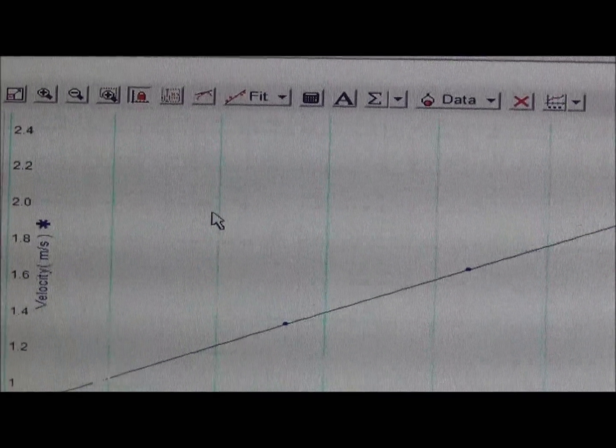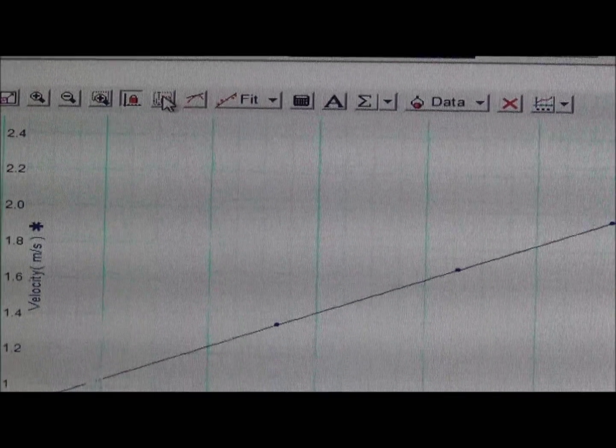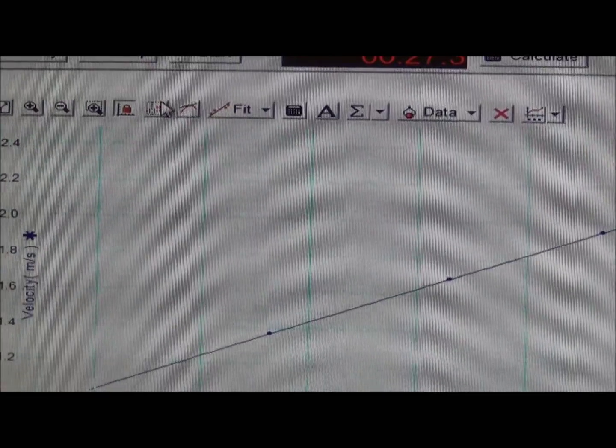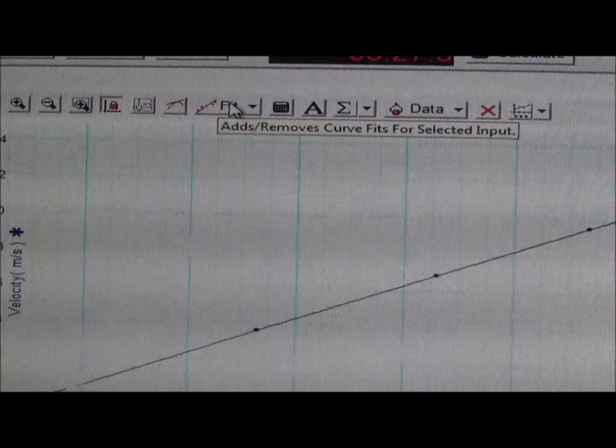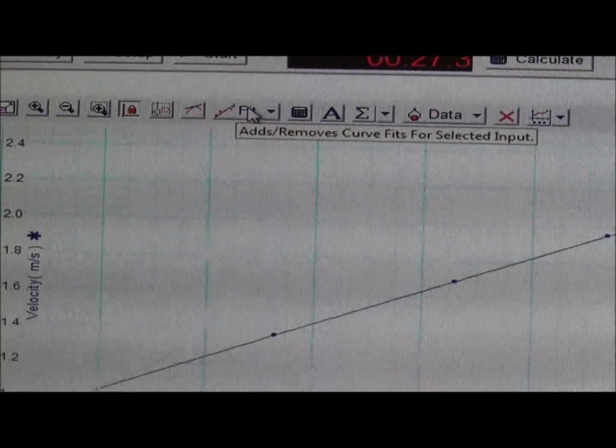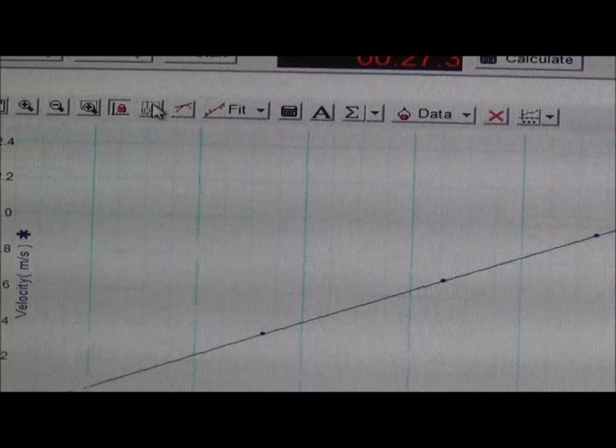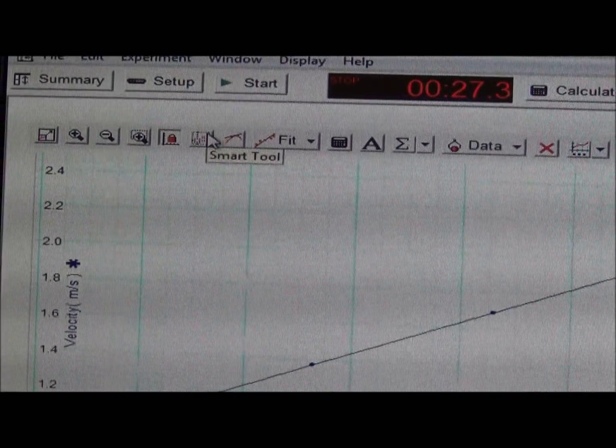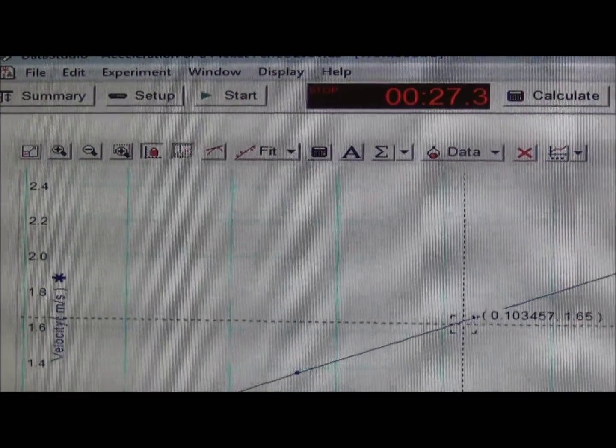Data Studio has several buttons up in the navbar section. To find out what each is, simply wave over the button. If you get the cursor close enough, each of the buttons will be identified. For example, I've waved over Fit and it says Adds/Removes Curve Fits. Over here, this is called the Smart Tool. The Smart Tool will help me find the slope of a line. Click on Smart Tool.